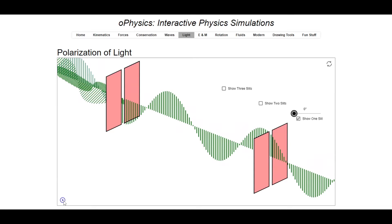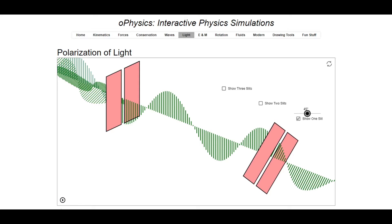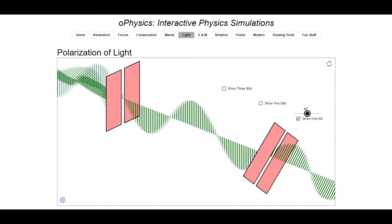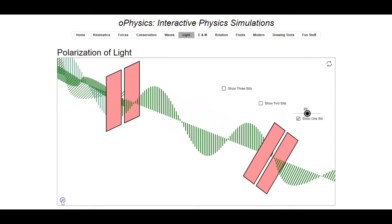If the second linear polarizer is at an angle to the first one, then the light only partially passes through in terms of intensity, but all the light that does pass through the second polarizer will be polarized at the same angle as the second polarizer.